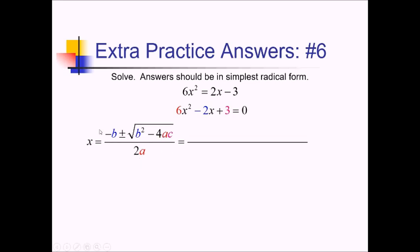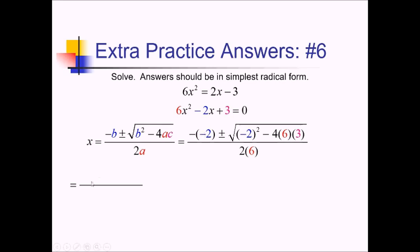Plugging things in, we have negative negative 2 — the b value is negative 2 — plus or minus square root of negative 2 squared, minus 4 times the a value 6, times the c value 3, all over 2 times 6. Simplifying further, we have positive 2 out there — that's what negative negative 2 is. Plus or minus square root of: negative 2 squared is 4, and then we have minus 72, and we're dividing by 12. So 4 minus 72 is negative 68.